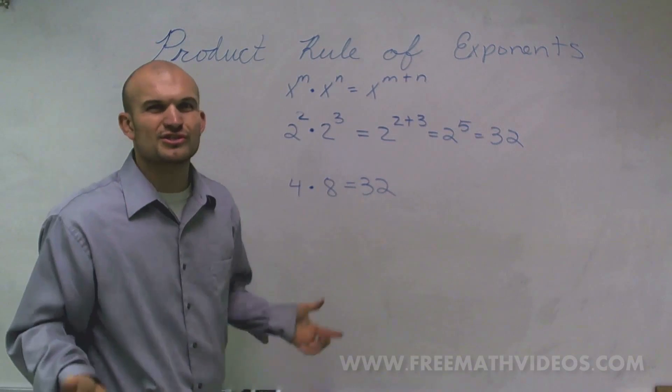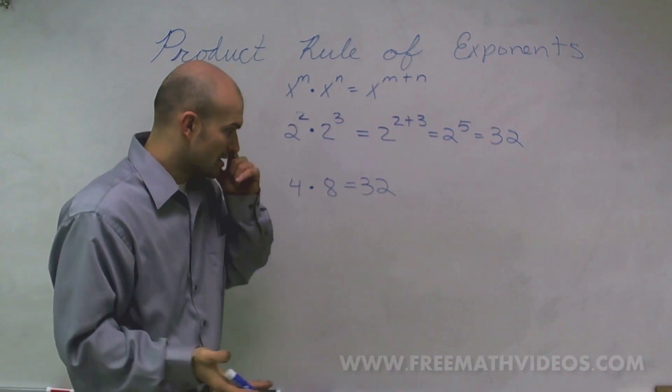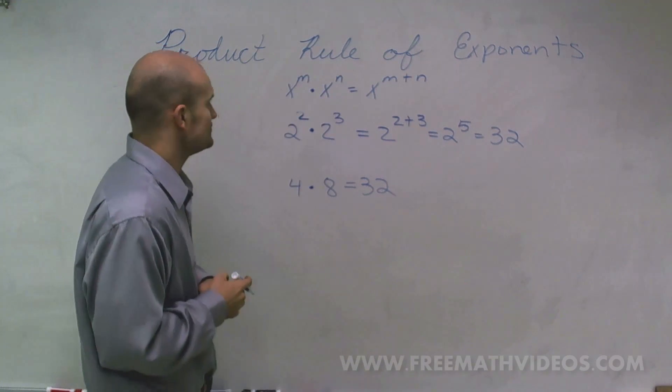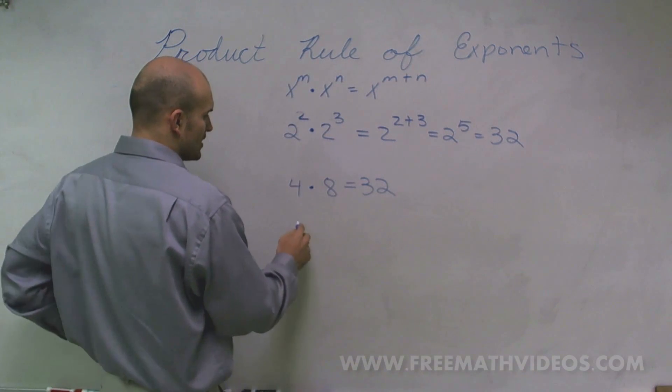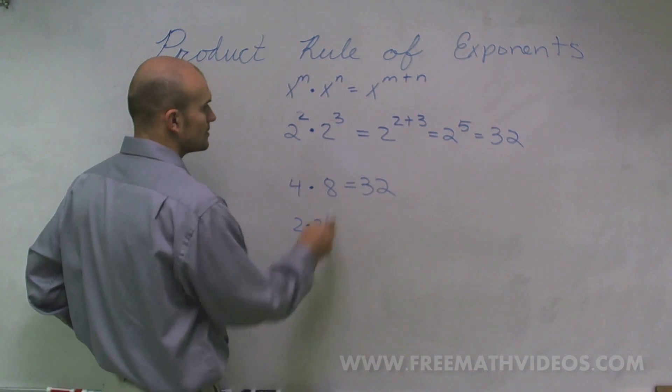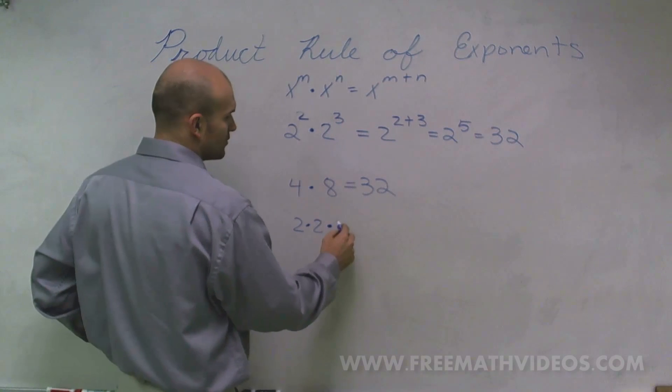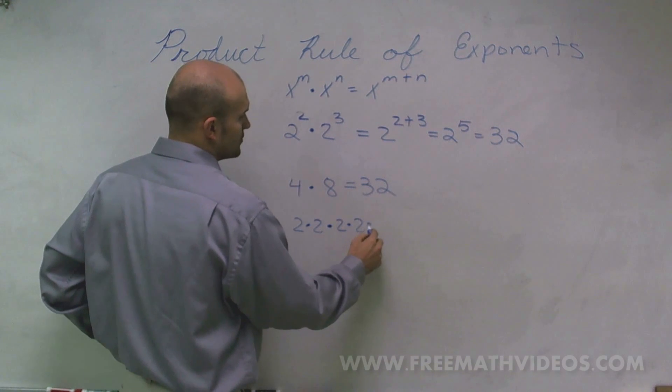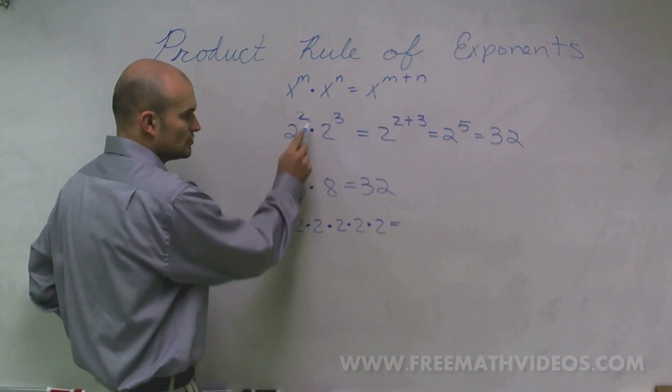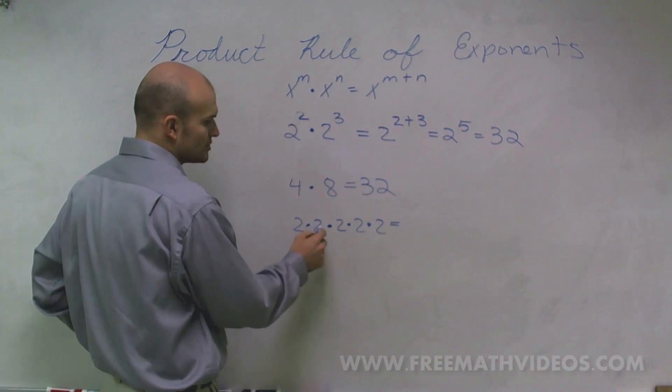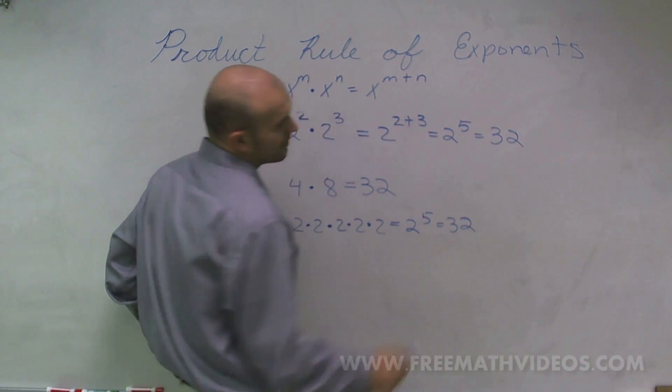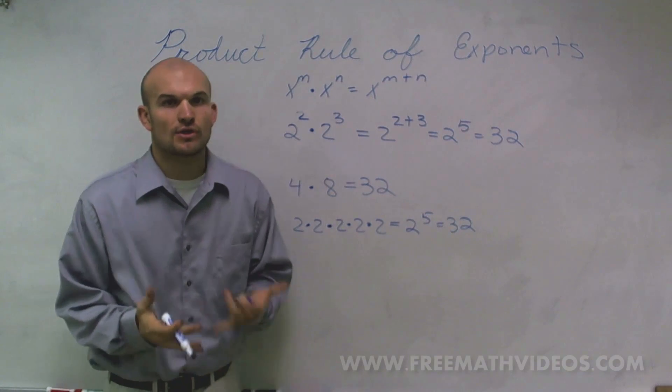I just want to show you one more example to prove to you why we can use the product rule of exponents. We know that 2 squared is equivalent to 2 times 2 times 2 cubed, which would then be equivalent to 2 times 2 times 2. That's the same thing then as 2 to the what power? 2 plus 1, 2, 3, 4, 5. So that's why our product rules are always going to work for us.